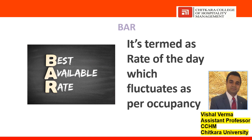Next is BAR — Best Available Rate. This is a rate that keeps varying as per occupancy. If the hotel has an occupancy of 50% in the morning, the hotel manager might prefer to drop the rate a bit. But the moment rooms start filling up and occupancy fluctuates, the rates get hiked up. BAR always varies and fluctuates as per occupancy — the moment occupancy goes up, rates go up accordingly. However, BAR can only go up till the rack rate; we cannot sell any room above the rack rate.